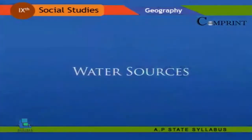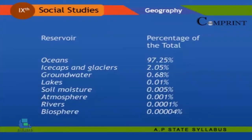Water sources: 97.25 percent of water is saline ocean water, and only 2.75 percent is fresh water. The greatest portion of fresh water — 68.7 percent — is in the form of ice and permanent snow cover in Antarctica, the Arctic, and mountain regions.